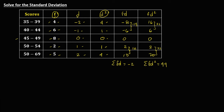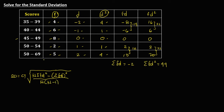We're done with the table and can now solve for the standard deviation. The formula is: SD = class interval × √[(N × ΣFD²) − (ΣFD)²] / [N(N−1)]. N is the total frequency — adding all frequencies gives N = 25. The class interval is the distance between two classes: from 35 to 40, so the class interval is 5.